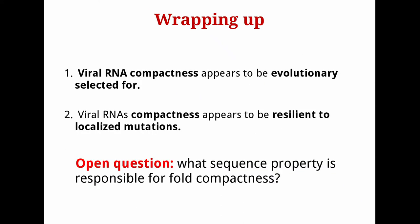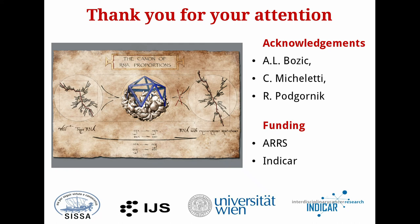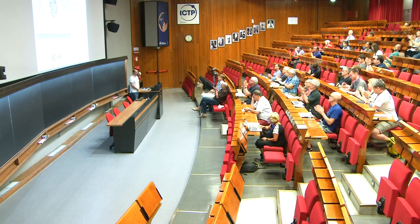Wrapping up: the take-home message is that viral compactness appears to be evolutionarily selected for, and it is resilient to localized mutations. The open question that remains is what causes this compactness — what is the code, if any, giving it to the genomes? There is no answer yet, but this is the direction of ongoing work. Thank you very much for your attention and to all those who contributed to the study.